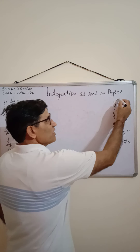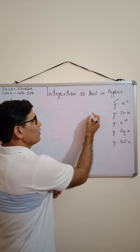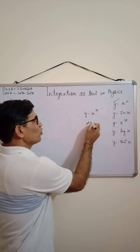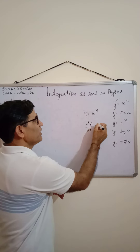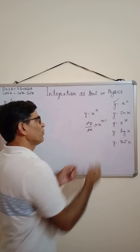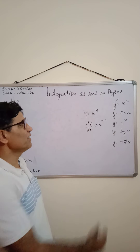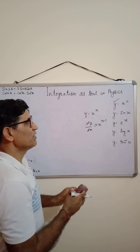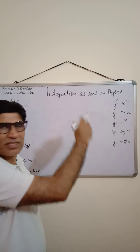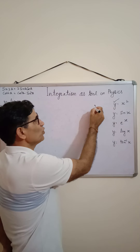If we have the function y = x^n, what will be the differentiation? The common formula is dy/dx = n·x^(n-1). So we can easily calculate differentiation of all these. For example, for y = x², the answer is 2x.